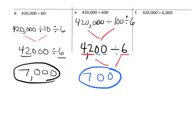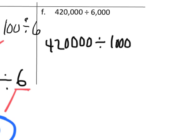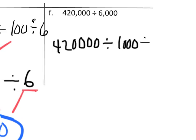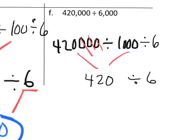Last example: 420,000 divided by 6,000, which we split into dividing by 1,000 and then dividing by 6. Dividing by 1,000 drops three zeros, giving us 420. Then 420 divided by 6 means 42 divided by 6, which is 7, with one extra zero remaining, so the answer is 70.